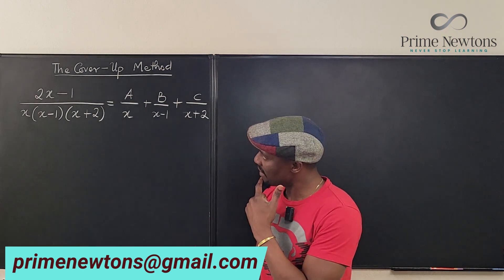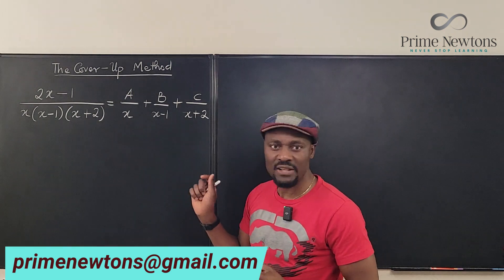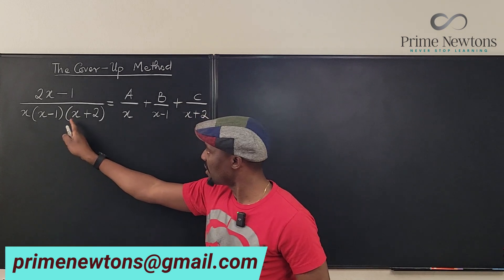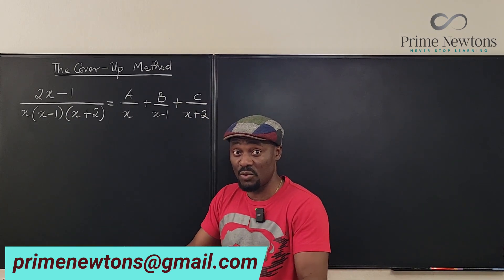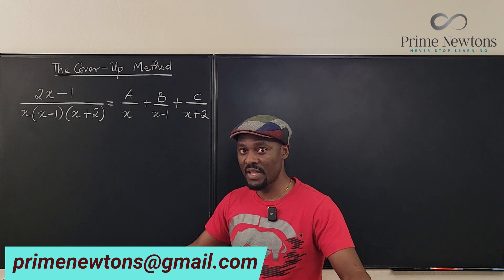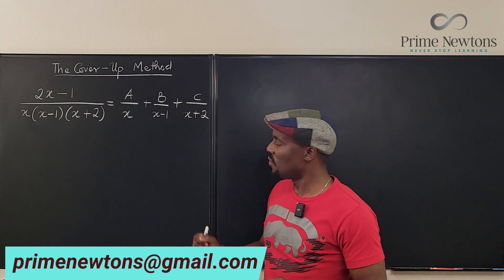And I look at this and I go, oh it's already in factored form and each of the terms in the denominator is linear. Whether you have two of them or three of them or four of them. And I go, yeah I know what A is.